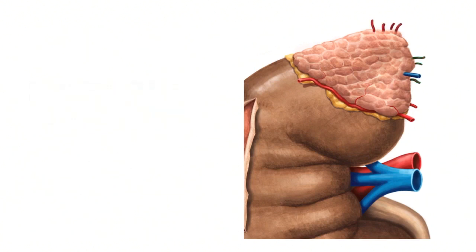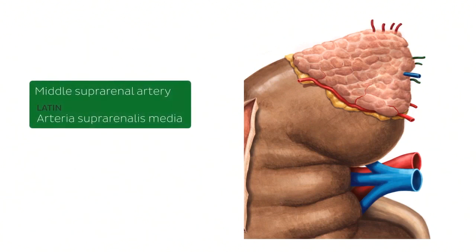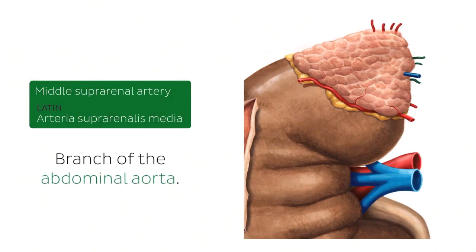The next type is known as the middle suprarenal artery. The middle suprarenal arteries are found on the medial side of the adrenal glands and are situated between the superior and inferior suprarenal arteries. The middle suprarenal artery is a branch of the abdominal aorta and also supplies the suprarenal gland with oxygenated blood.